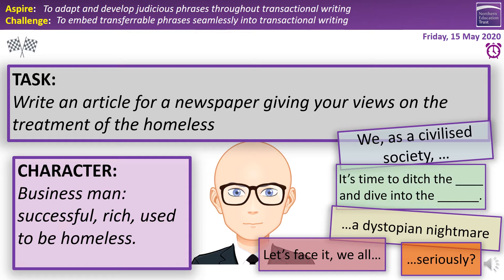What could we have here? Obviously he's going to be for the homeless because of his experience. We could have: 'We as a civilized society need to treat everybody equally.' Or: 'It's time to ditch the prejudice and dive into the equality.' 'If we don't allow this homeless epidemic to end, we will head towards the dystopian nightmare.' You could also bring in his rich, successful persona: 'Let's face it, we all want to be successful and I've made millions off the back of my hard work. However, if it wasn't for one man and his help for me as a homeless person, I wouldn't be where I am today. In fact, I'd be heading towards a dystopian nightmare.' A challenge: could you put two or even three phrases into one?